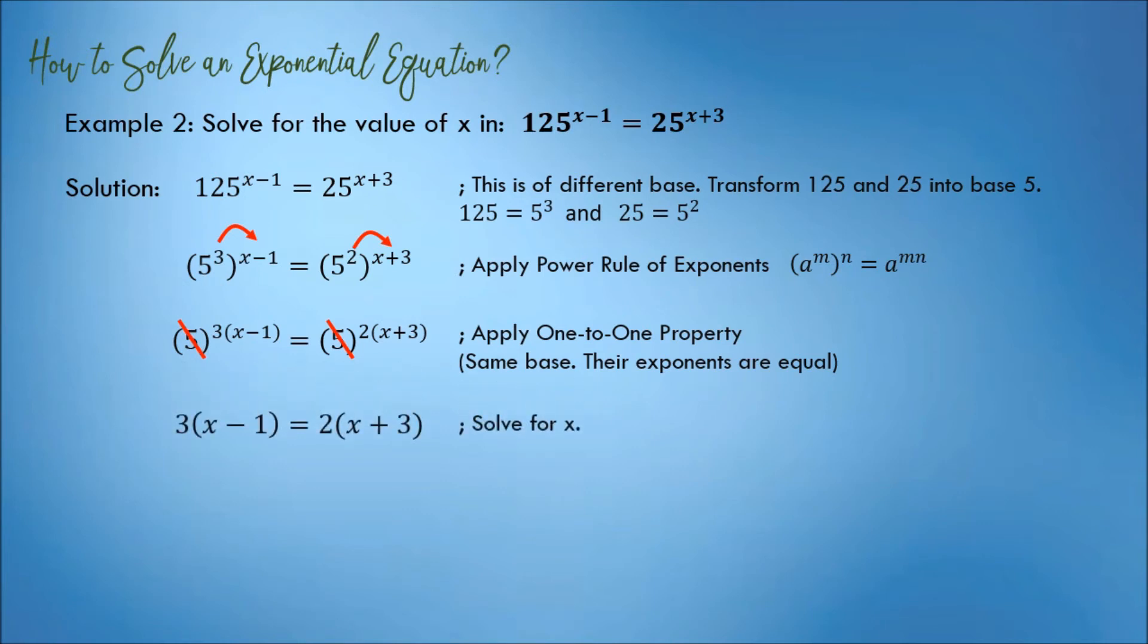Simplify the equation and solve for the value of x. This left side will become 3x minus 3. This right side will become 2x plus 6.